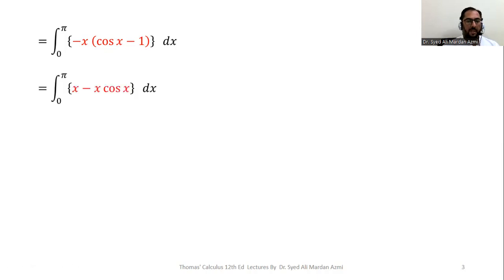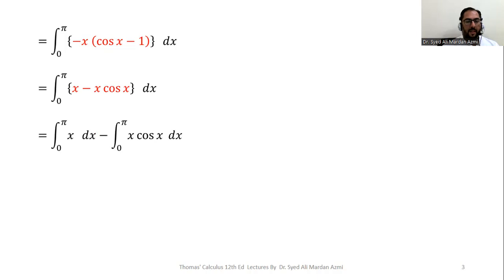Simplifying the brackets we get x minus x cos x dx. Now we can integrate this function using the outer integral with limit from 0 to pi with respect to x. We separate the integral on each term, getting the integral from 0 to pi of x dx minus the integral from 0 to pi of x cos x.